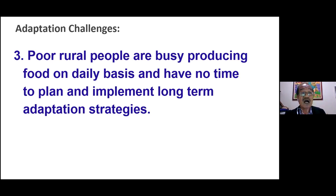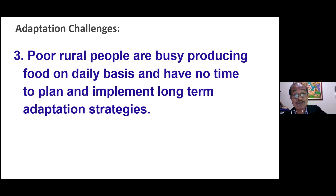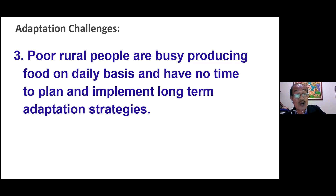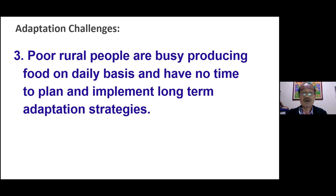Challenge number three: poor rural people are busy producing food on a daily or short-term basis, and they have not much time to plan and implement long-term adaptation strategies. They are worried about food for the following day and for the week. Adaptation to climate change requires more planning and more resources, and people don't put much attention to this because they have to survive on a daily basis.